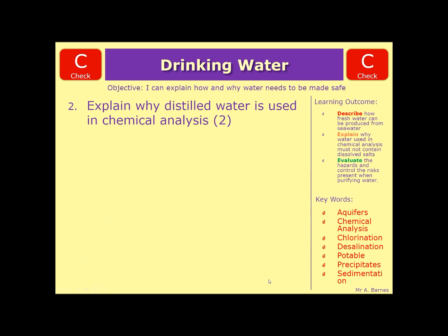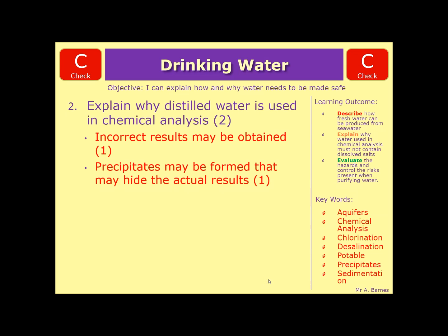Second question, which is explain why distilled water is used in chemical analysis. The incorrect results may be obtained is the key thing here. So the reason that we want to have chemical analysis, we want to have distilled water is to remove any anomalies. Then the second mark is you might get precipitates formed if you do have impure water.